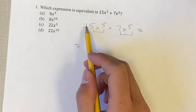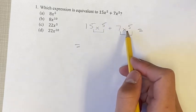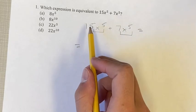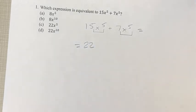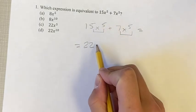So just think of that as we have 15 of this plus 7 of this. So what does that equal? It's going to equal 15 plus 7, which is 22, of this. And this is x to the 5th.